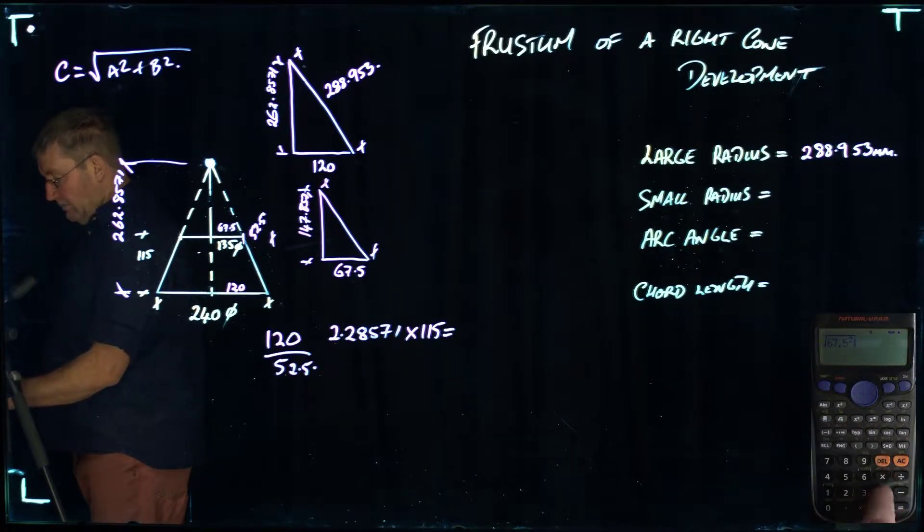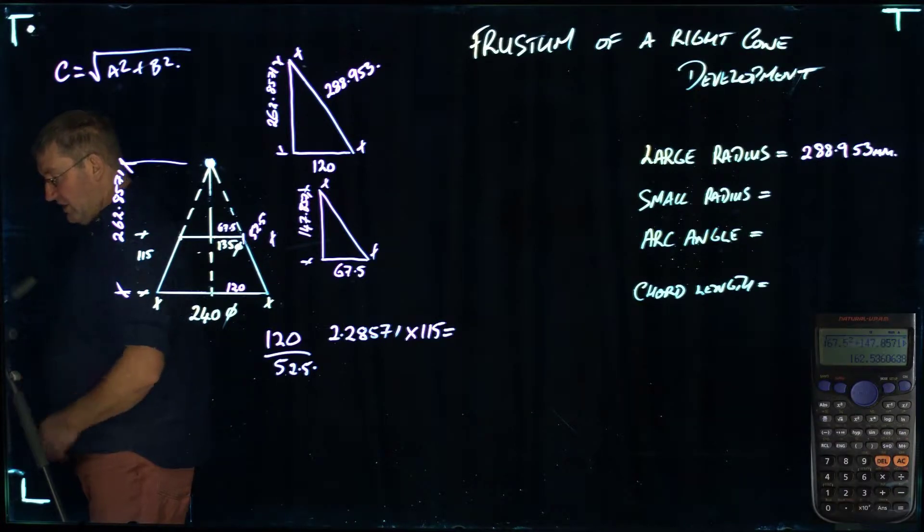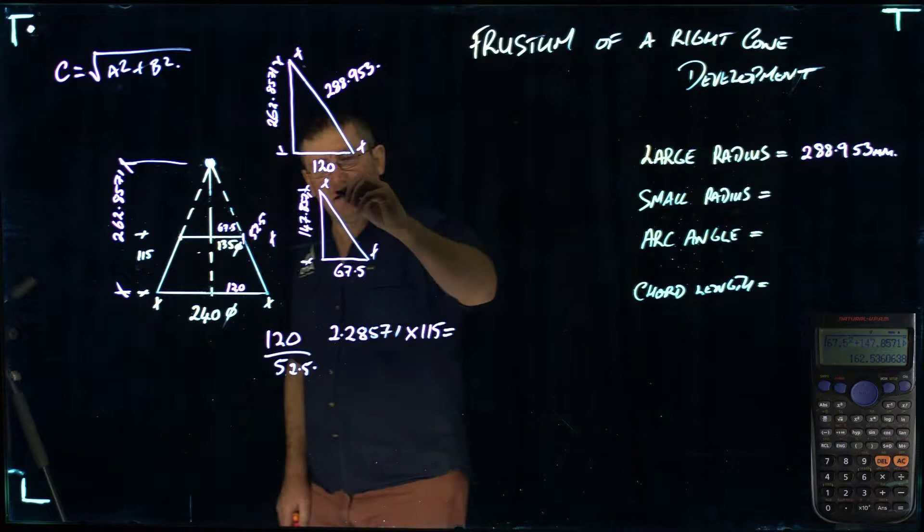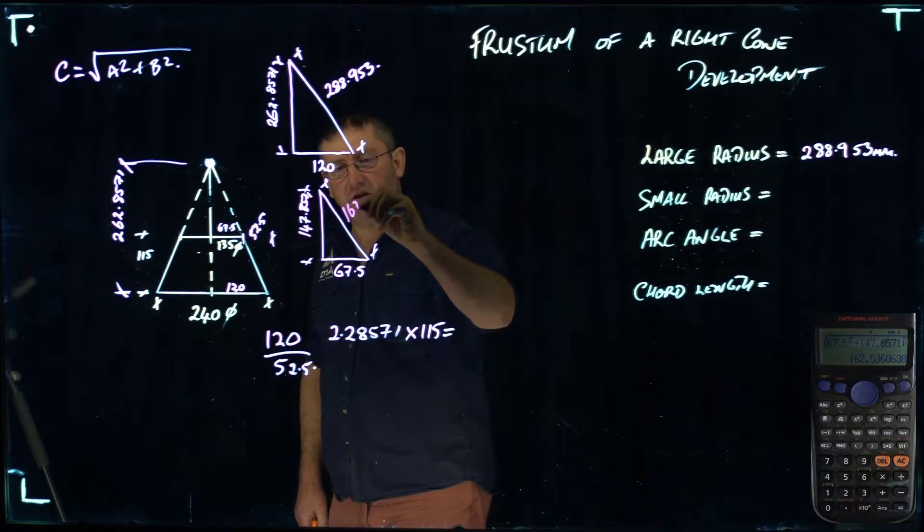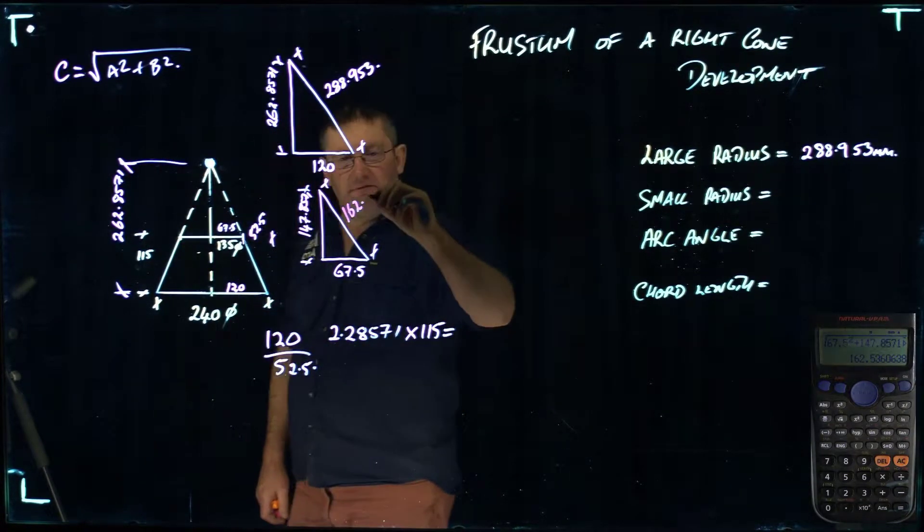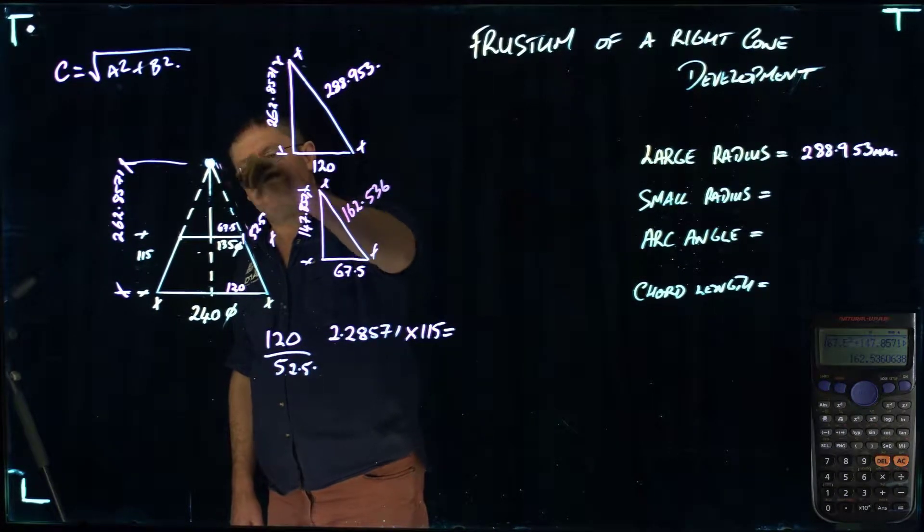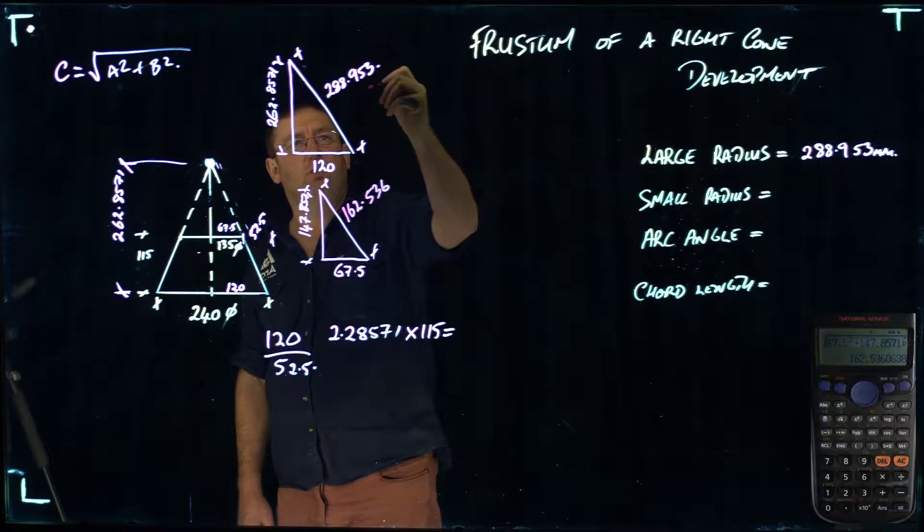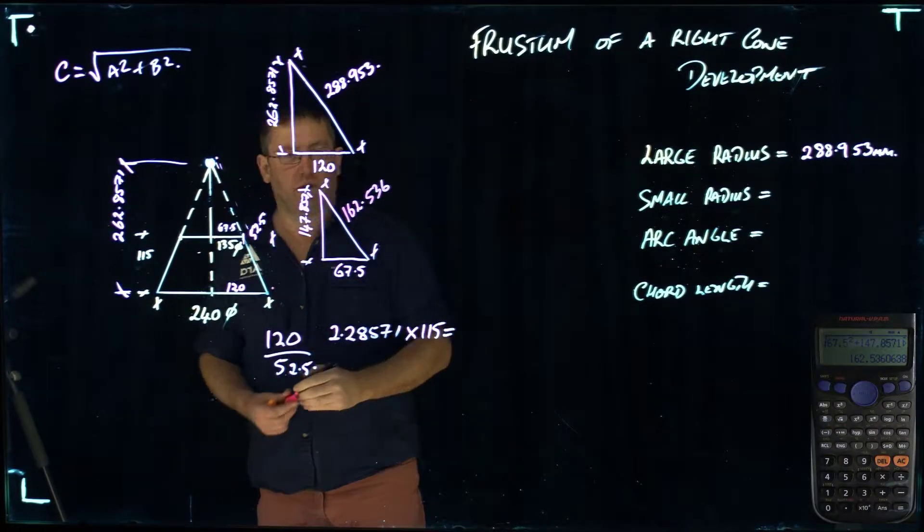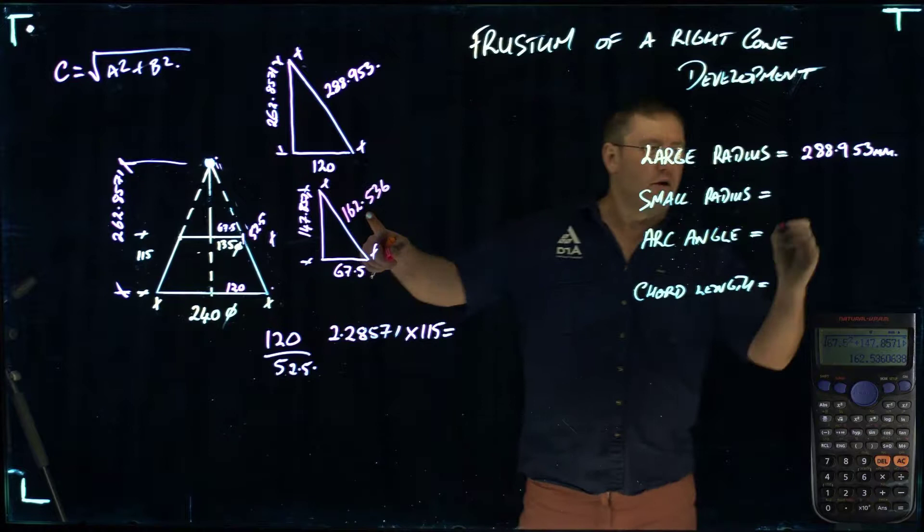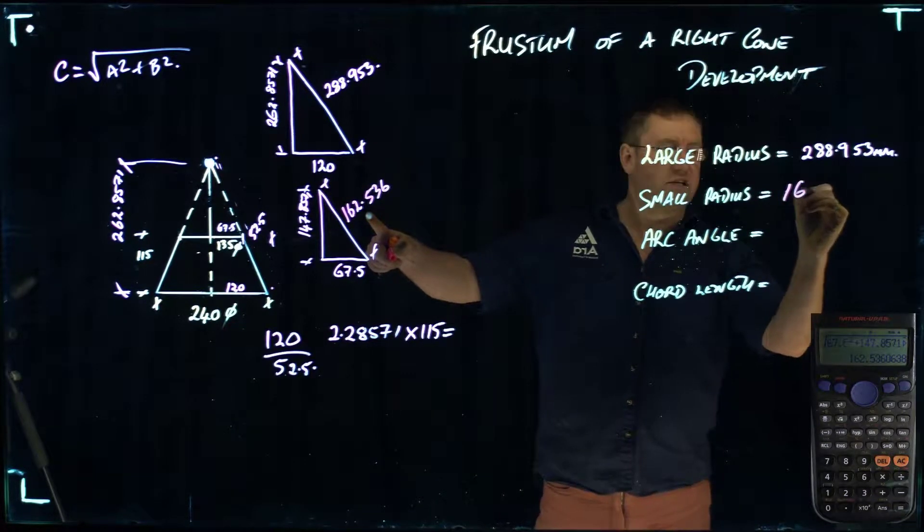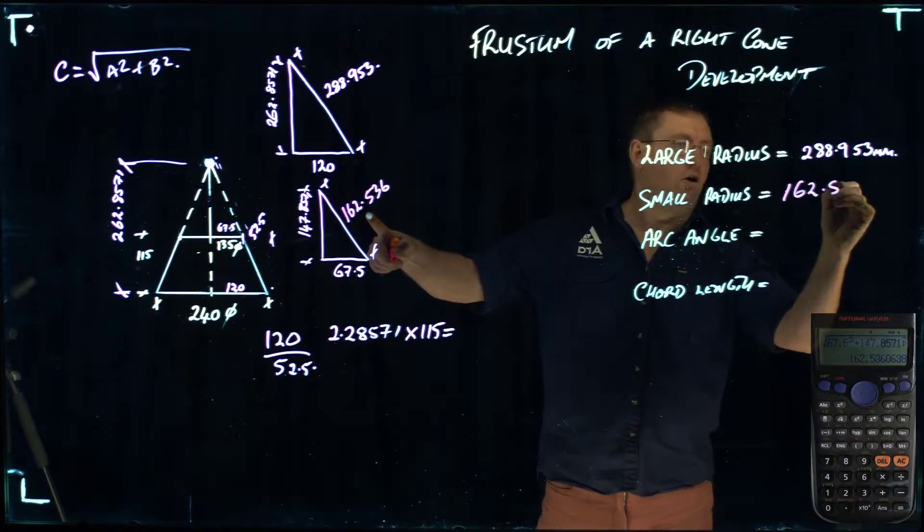I've pushed my square root figure. I'm going to push 67.5 squared plus 147.8571 squared and push equals. That's giving me a length here of 162.536. So that's that distance with the 288.953 from the apex right to the base at that point there. My small radius at this point equals 162.536.